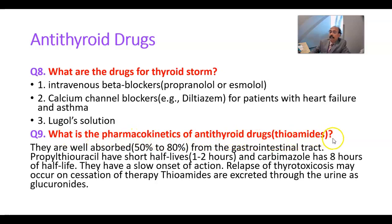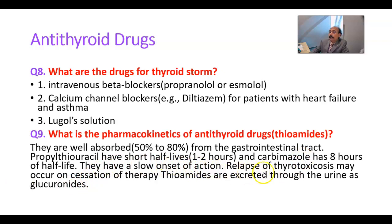What are the pharmacokinetics of antithyroid thioamides? They are well absorbed — around 50 to 80 percent from the gastrointestinal tract, particularly the duodenum and jejunum. Propylthiouracil has a short half-life of one to two hours, but its duration of action is prolonged at six to eight hours, requiring multiple doses per day. Carbimazole has a half-life of eight hours and is accumulated in thyroid follicles, with a duration of action of 24 hours, so it may be given once daily. These drugs have a slow onset of action, and relapse of thyrotoxicosis may occur on cessation of therapy. Thioamides are excreted through the urine as glucuronide.